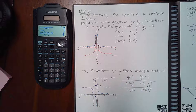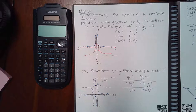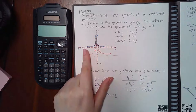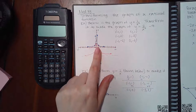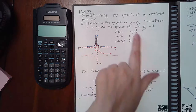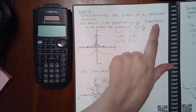Module 33 is a continuation of rational functions, but they do take us back to the transforming of graphs. They give a graph in blue with a red asymptote, and said below is the graph of y equals 1 over x squared — transform it to turn it into this graph.